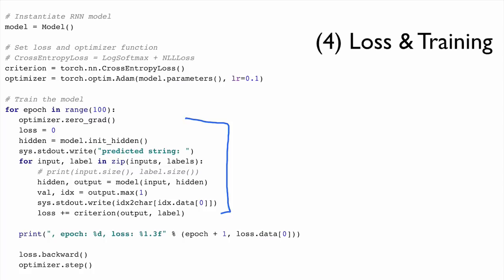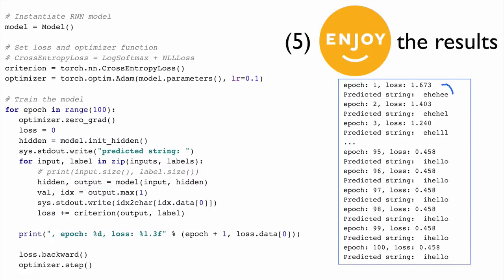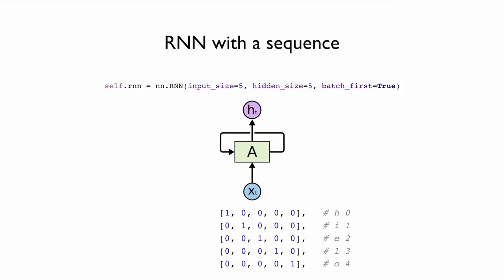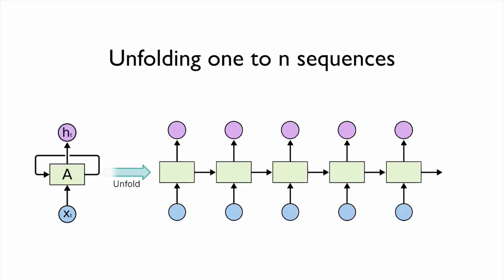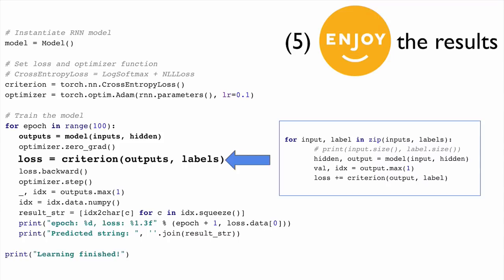In each iteration we can print the output to see what the model predicts. At the beginning, the loss is high and predictions look random. As training progresses, it can predict next letters correctly. However, running a for loop for each letter is not ideal. Instead, we can feed the entire input at once — just as in our previous examples — without needing to change the model.